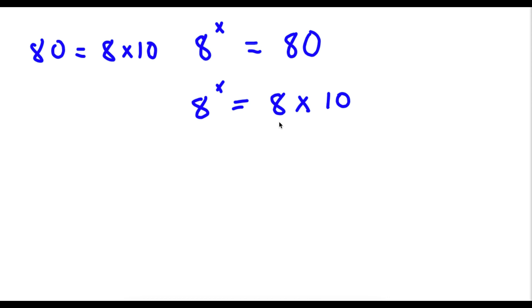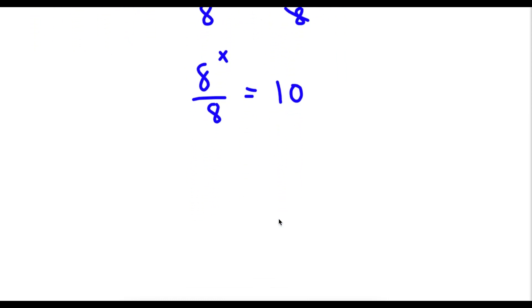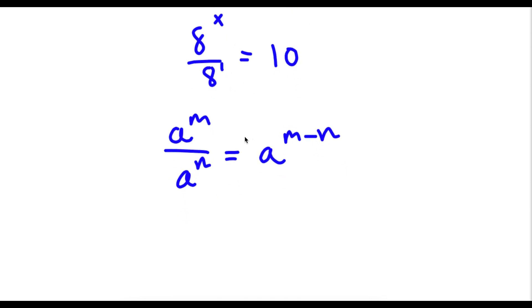Now I can divide both sides by 8. So I have 8 to the power of x over 8, and these two cancel out, leaving simply 10. Now 8 here is the same thing as 8 to the power of 1. Using the rule a to the power of m over a to the power of n equals a to the power of m minus n, I get a to the power of x minus 1, which equals 10.